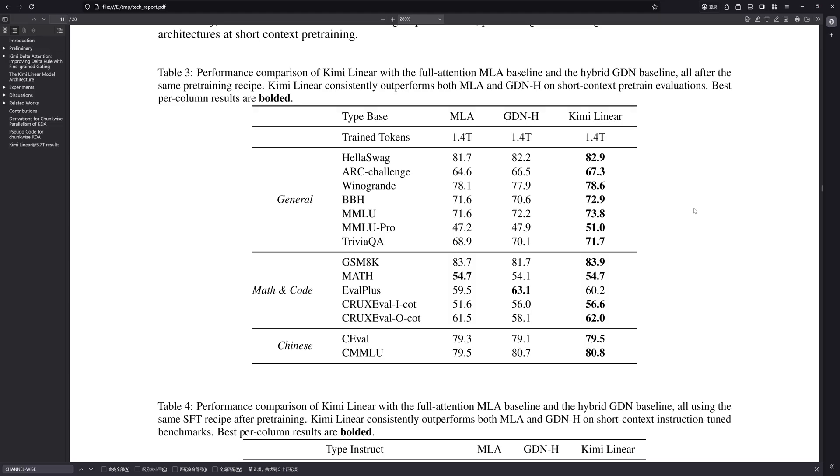And I'd conclude that Kimi Linear is undoubtedly a landmark achievement, but its success is primarily rooted in brilliant engineering and the necessity of hybridization. The dramatic practical benefits, the speed, the memory savings, show that, for now, the most effective way to build these next-gen LLMs involves pragmatically mitigating the inherent theoretical limits of purely linear attention through smart architectural design, rather than having completely solved them at a fundamental level.